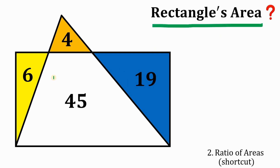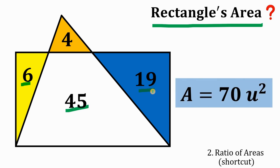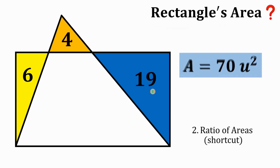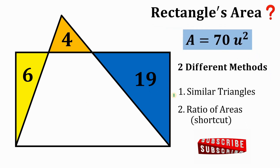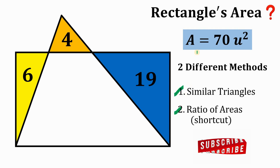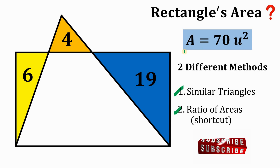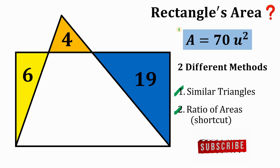The rectangle's area is simply the sum of 6, 45, and 19, which is 70 square units. Therefore, given these two different methods — similar triangles and ratio of areas — we arrive at the same result: the area of this rectangle is 70 square units. And as always, we are done.